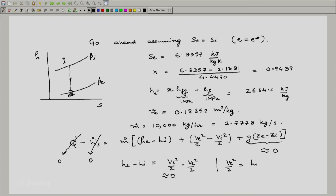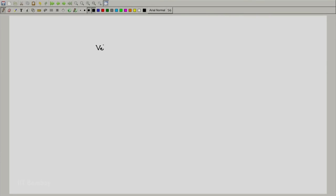The nozzle is meant to accelerate the fluid to a higher velocity. So, we say that this is nearly equal to 0, which means that we get V e squared by 2 is equal to H i minus H e. All we have to do now calculate this. V e squared is 2 multiplied by H i minus H e. We have to convert this into joule per kg, so we first substitute the values: H i was 3043.9 and H e now we have calculated as 2664.1, and we multiply this by 1000 so that our units are correct. We get V e should be equal to 871.55 meters per second.